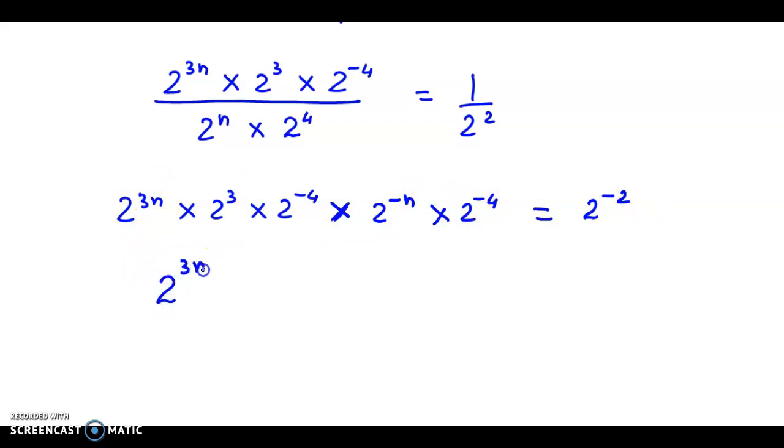Now this is 3n plus 3 minus 4 minus n minus 4 equals 2 raised to minus 2. So we have 2 raised to, now 3n minus n is 2n. Now 3 minus 4 is minus 1, again minus 4, here we go minus 5, equals 2 raised to minus 2.